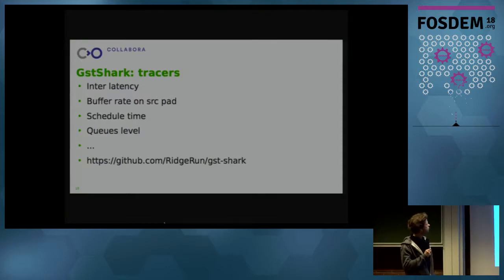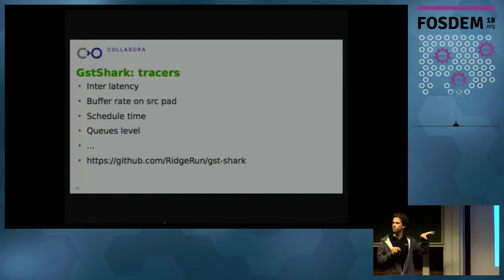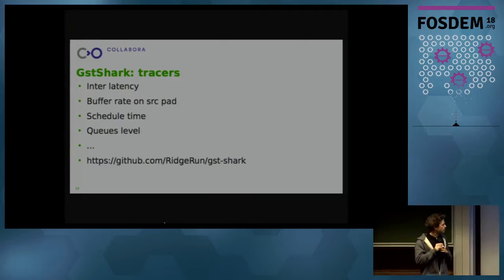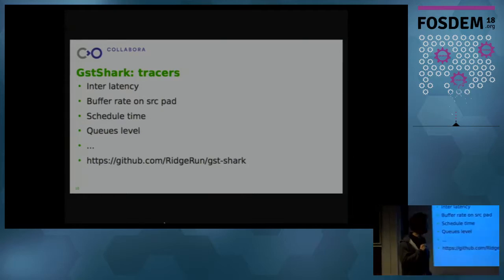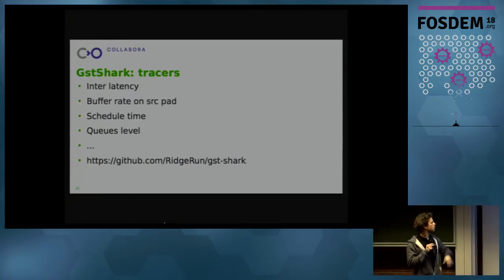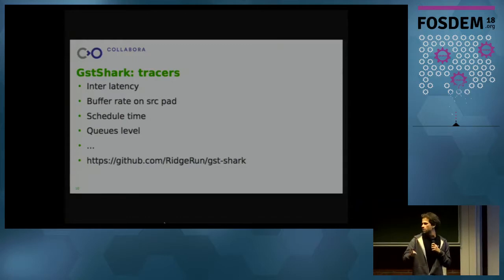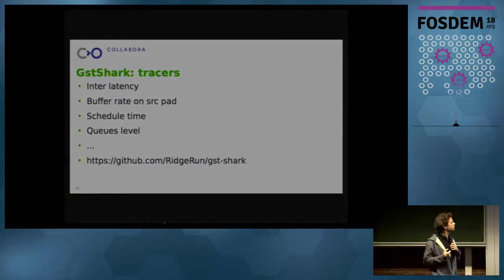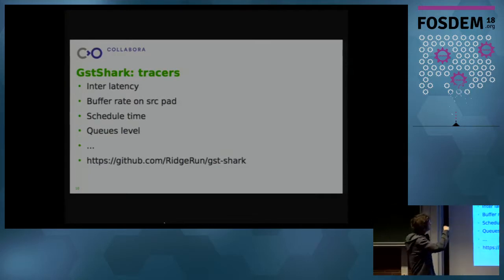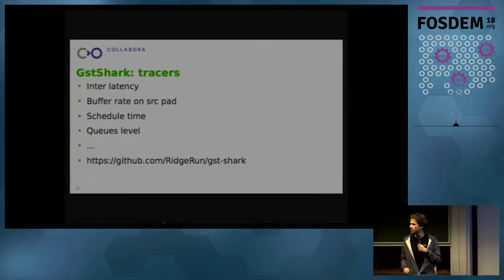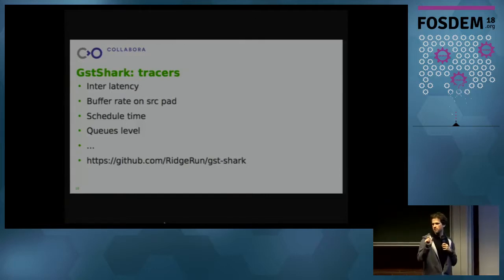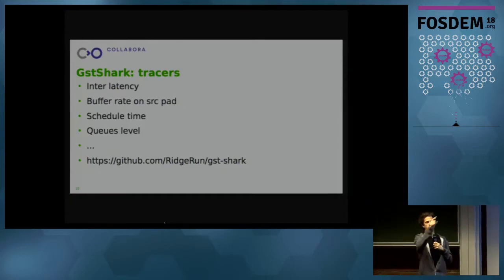Now going back to tracers — all the tracers I've presented so far are merged in GStreamer core, but third parties can also develop their own tracers. GST Shark is one of them. It's developed by RidgeRun and contains a whole lot of tracers which are more specialized versions of the upstream ones or provide extra features. You can measure things like inter-latency — it measures the latency between each element in the pipeline, while the upstream one measures from source to sink. We have some plans to merge that into the upstream tracer at some point.